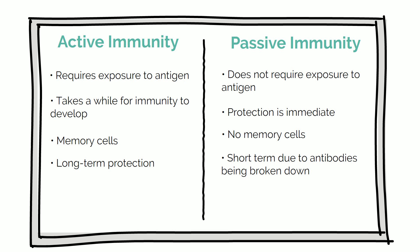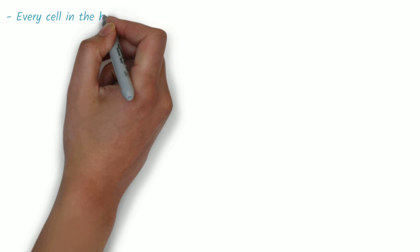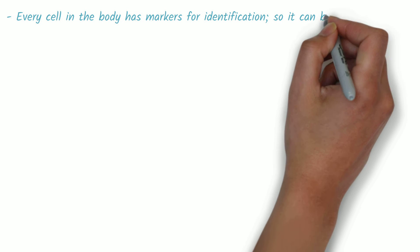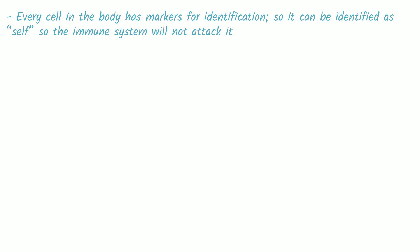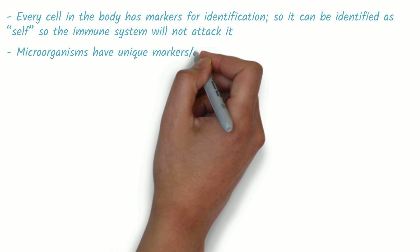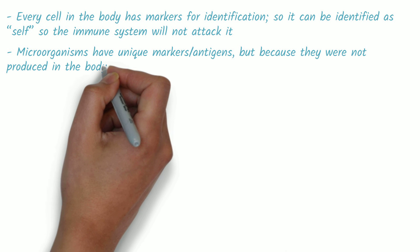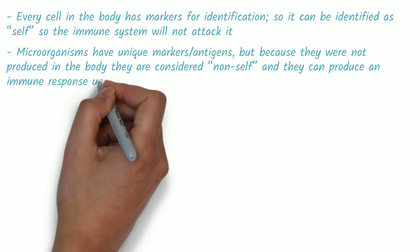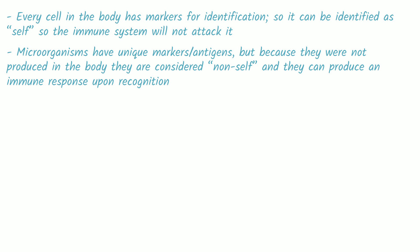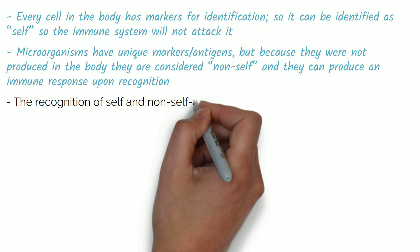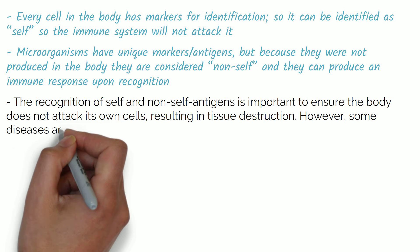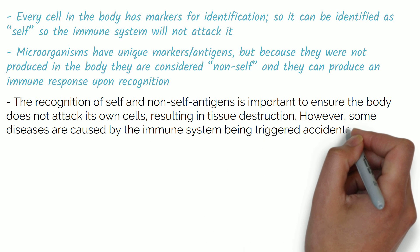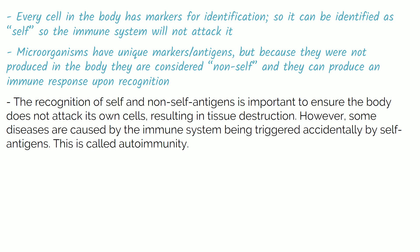The active immune system relies on the recognition of an antigen as pathogenic or non-self. Every cell in the body has markers for identification so it can be identified as self, and the immune system will not attack it. Microorganisms have unique markers or antigens, but because they were not produced in the body they are considered non-self and can produce an immune response upon recognition. The recognition of self and non-self antigens is important to ensure the body does not attack its own cells, resulting in tissue destruction. However, some diseases are caused by the immune system being triggered accidentally by self-antigens. This is called autoimmunity.